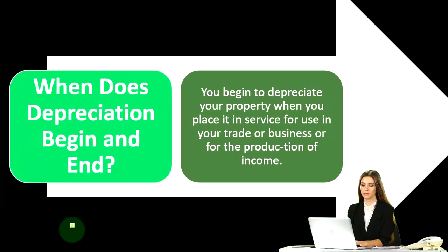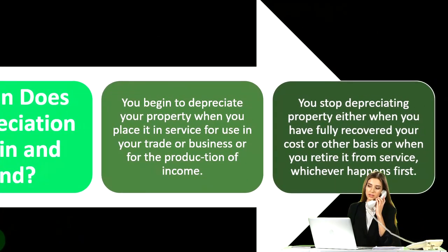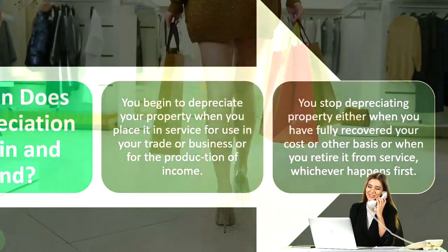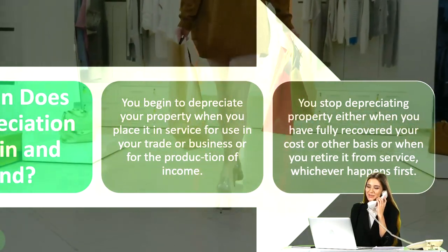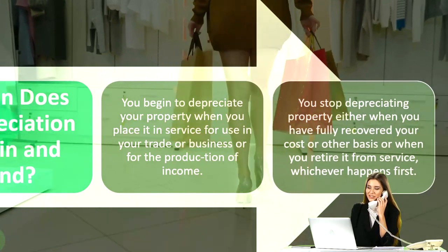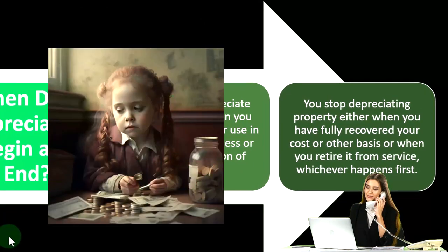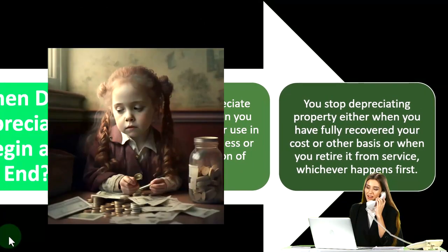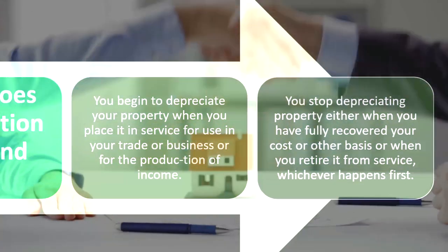You begin to depreciate your property when you place it in service for use in your trade or business or for the production of income. That's the ordinary and necessary business purpose — why we're buying the asset. When we put it in place for the production of income and revenue generation, that's when you put it on the books as a depreciable item.